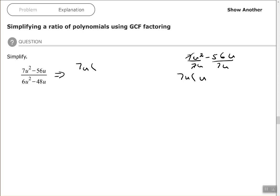So u to the first minus 9. Sorry, I'm messing up my multiplication. Sorry about that. So u to the first times 8. All right, so 7u times u minus 8.